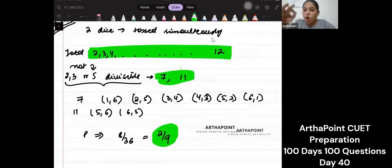When will I get 7? When I get (1,6), (2,5), (3,4), (4,3), (5,2), or (6,1). When will I get the sum as 11? When I get (5,6) or (6,5).